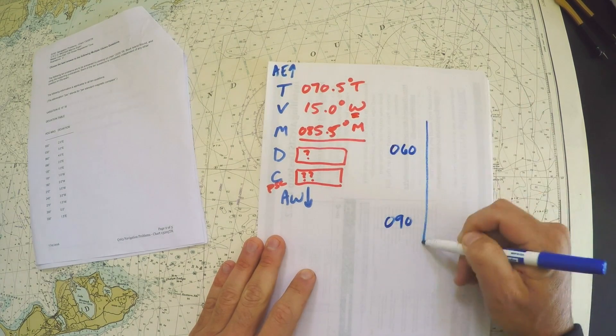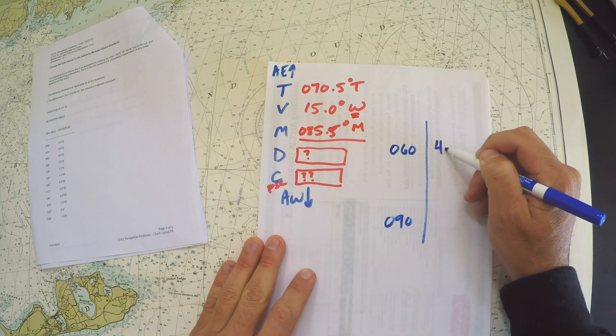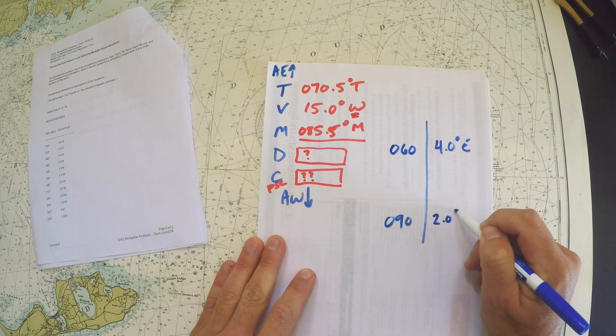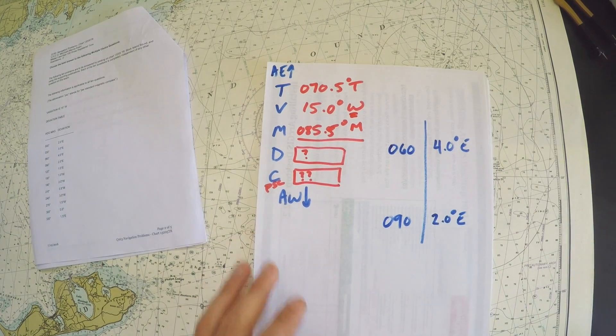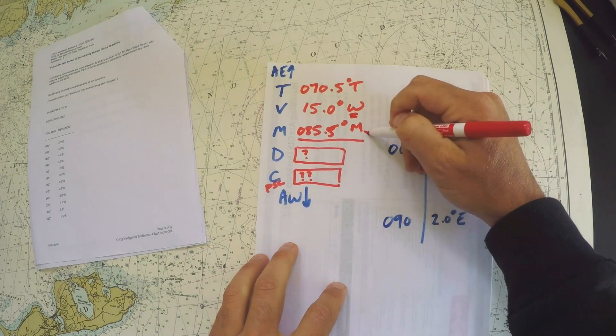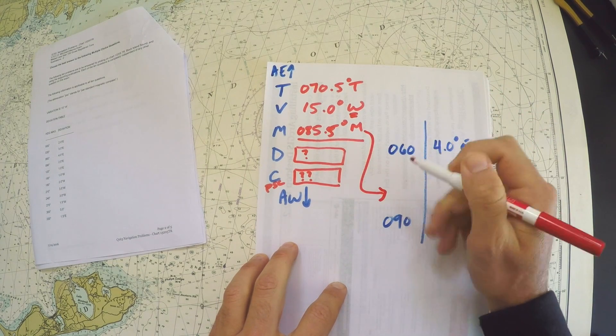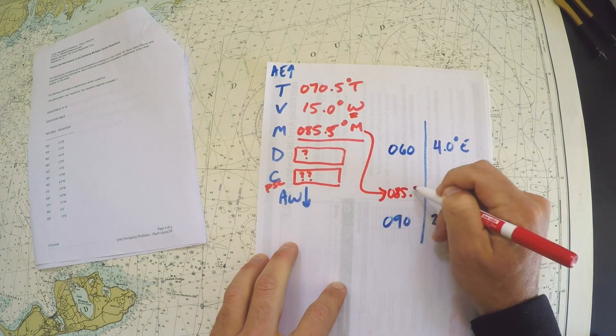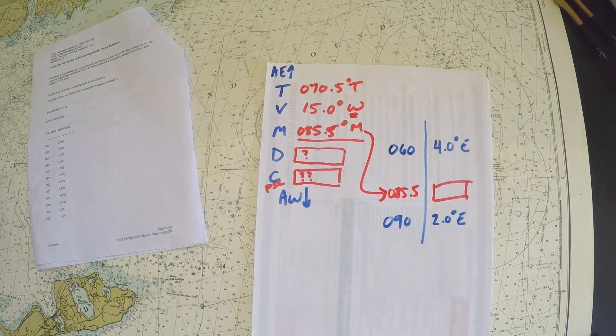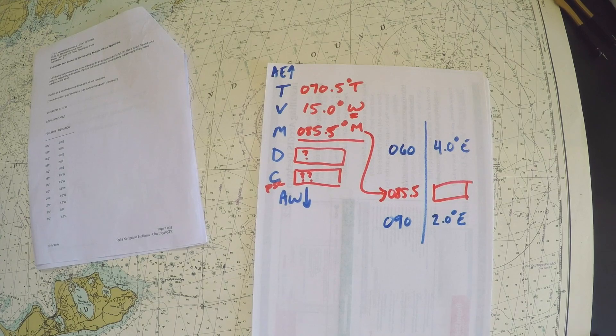So it said 060, 090, and those values were 4 degrees east and 2 degrees east. Our value of 085.5 is not listed but it fits in there, 085.5. So we want what the deviation is going to be for exactly that course.